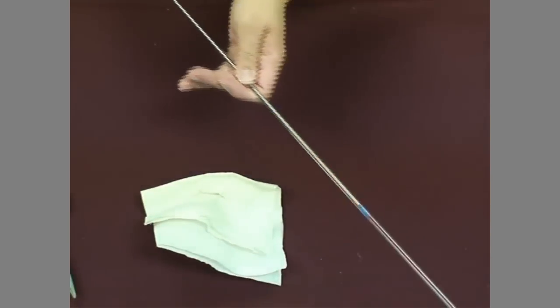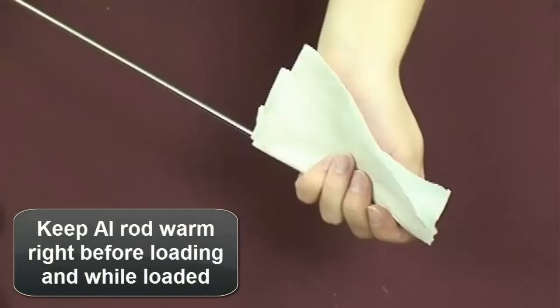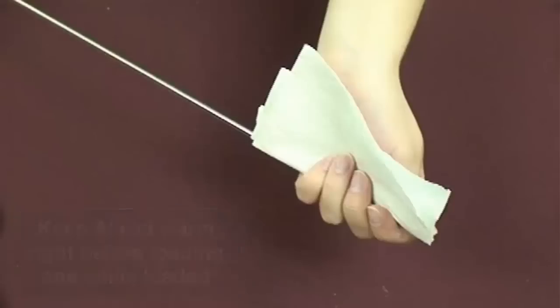Hold the insemination rod next to the semen handler's body and under the clothing to warm it before loading the thawed semen and until insertion of the rod into the animal for insemination. Brisk rubbing of the end of the insemination rod with a wrapped paper towel can warm the rod through friction.